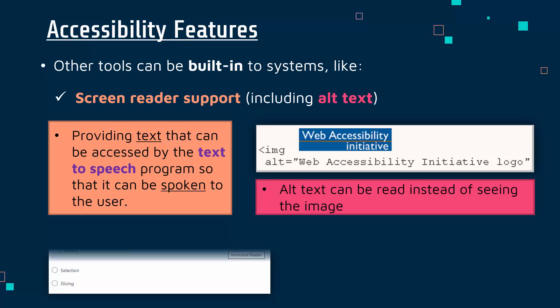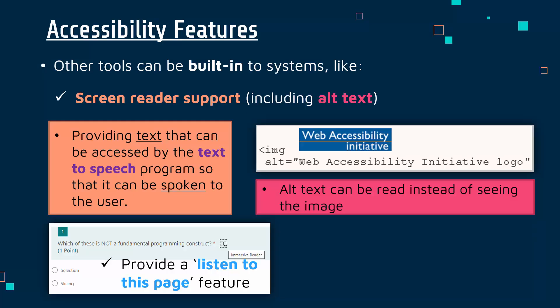You can go a step further and integrate your own text-to-speech screen reader feature in your website or application by providing a 'listen to this page' feature, which you'll sometimes see. This can be better than a standard screen reader because you could get a person to actually record the speech, as opposed to having a robot voice. If it's an article, for example, you could have one of your journalists read it out and embed it in this feature to better support people who might have vision impairments.